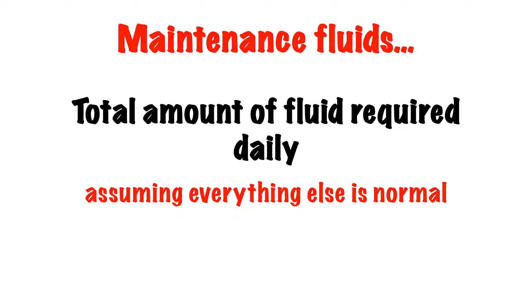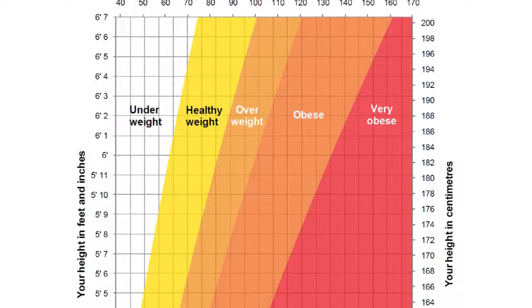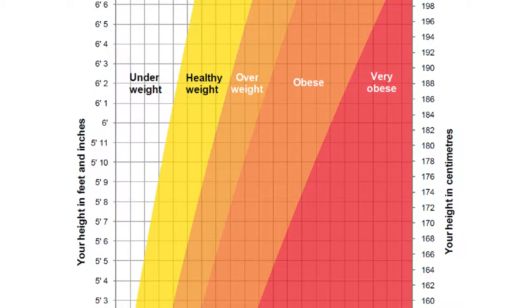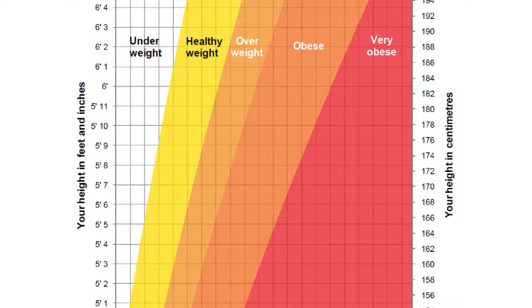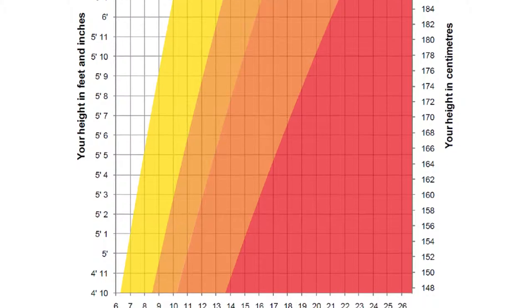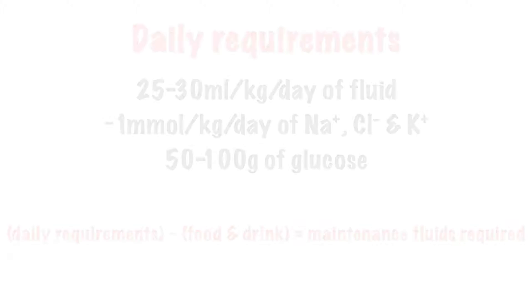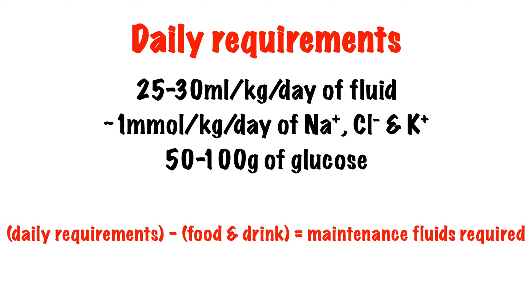Since this is a basic guide, we are going to look at maintenance fluid. Maintenance fluid is the total amount of fluid we require per day assuming everything else is normal. When prescribing maintenance fluids we need to use the patient's ideal body weight. Most patients' actual body weight will fall within this range if we look at a BMI chart, but we should use their ideal weight rather than their actual weight for obese patients, otherwise it will be easy to overload them. Our daily requirements are between 25 and 30 ml of fluid per kg per day.